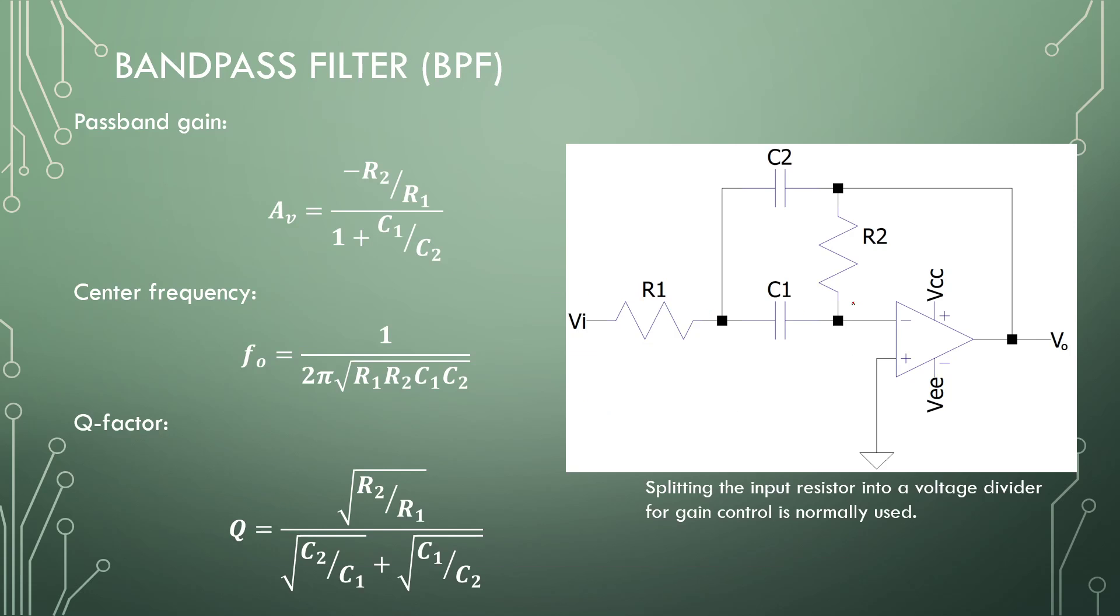The multi-feedback bandpass filter has a feedback through resistor 2 and a feedback through capacitor C2. As you can see, it doesn't have positive feedback. You can achieve much higher Q factors using this configuration, but that costs a lot of gain from the amplifier itself. You need an amplifier that is capable of wide bands and extremely high gains.